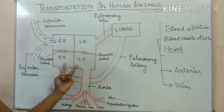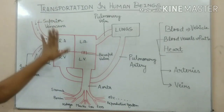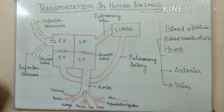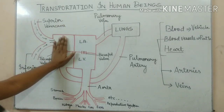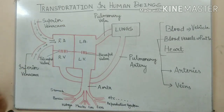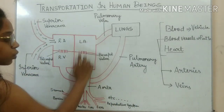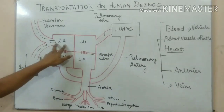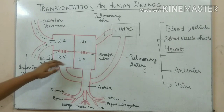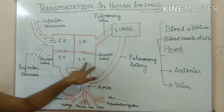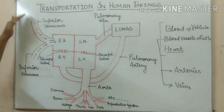The heart has four chambers. The upper two chambers are called auricles and the lower two chambers are called ventricles. If this is my left hand, this is my left side — these two chambers will be designated as right. If this is my right side, these two chambers will be designated as left. So: upper ones — right auricle, left auricle; lower ones — right ventricle, left ventricle.